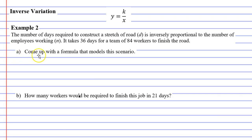Question A says, come up with a formula that models this scenario. Now, as soon as we see inversely proportional, we know that we've got to use our formula up above, y equals k over x. So we'll start by writing that down, y equals k over x.